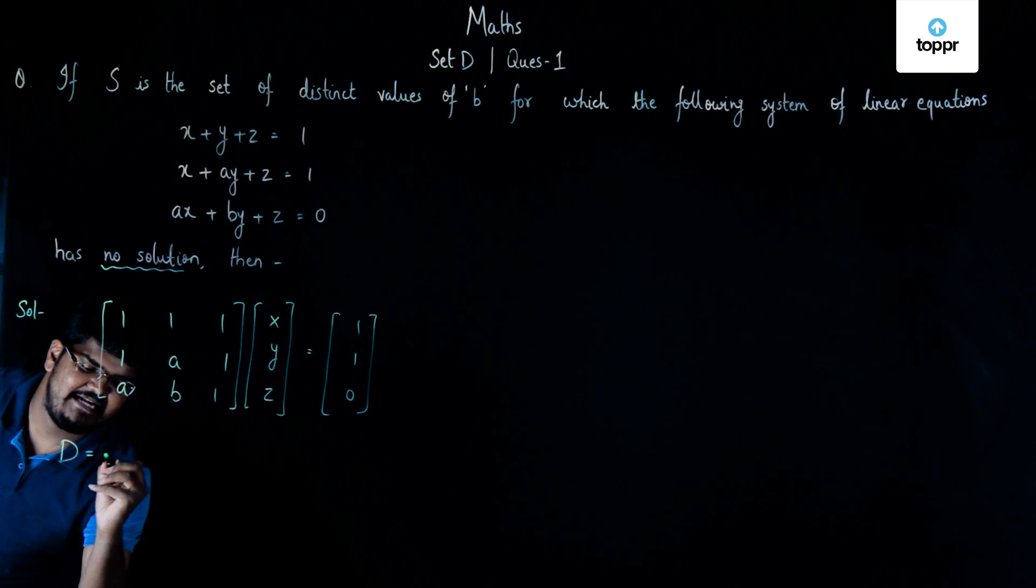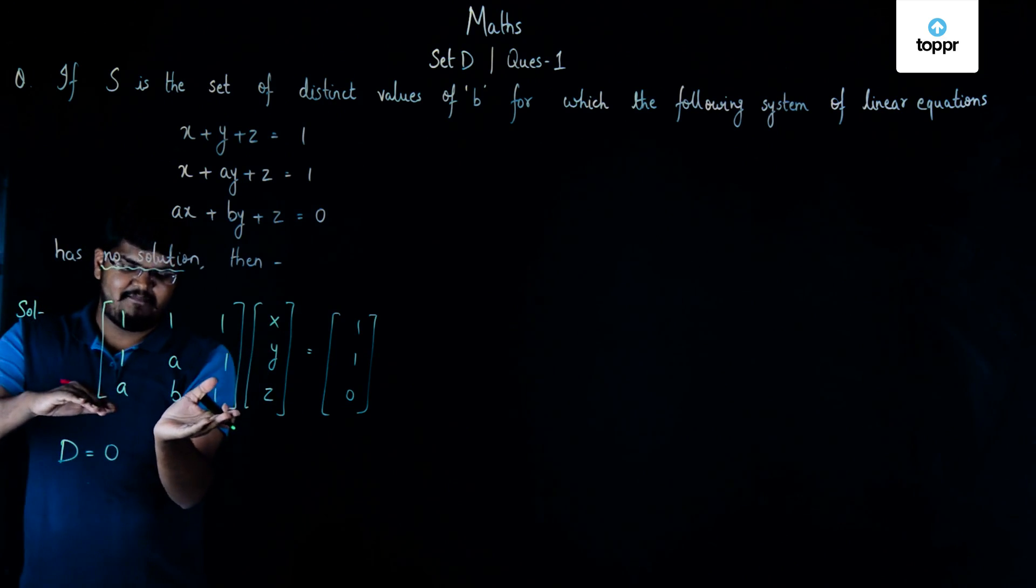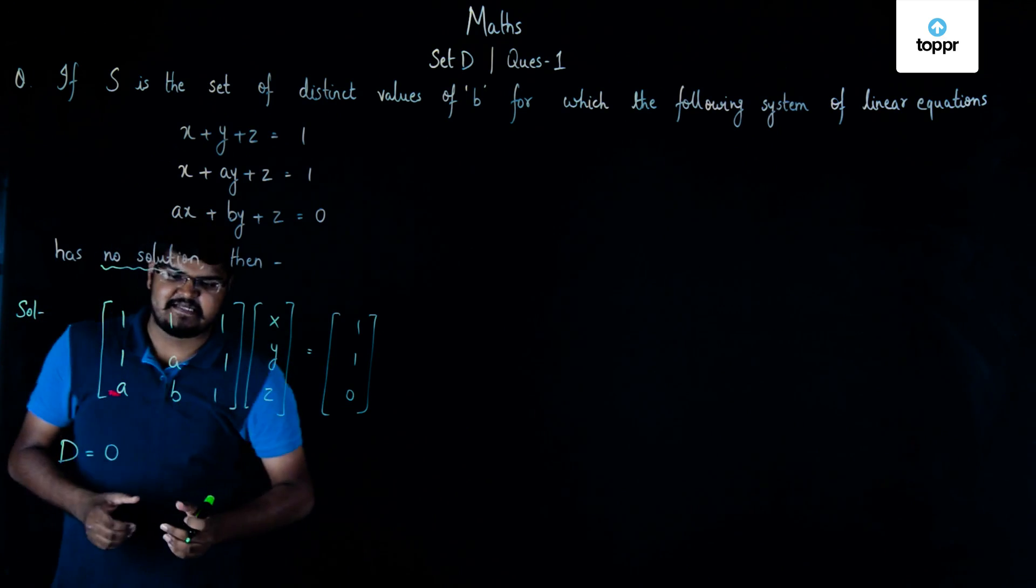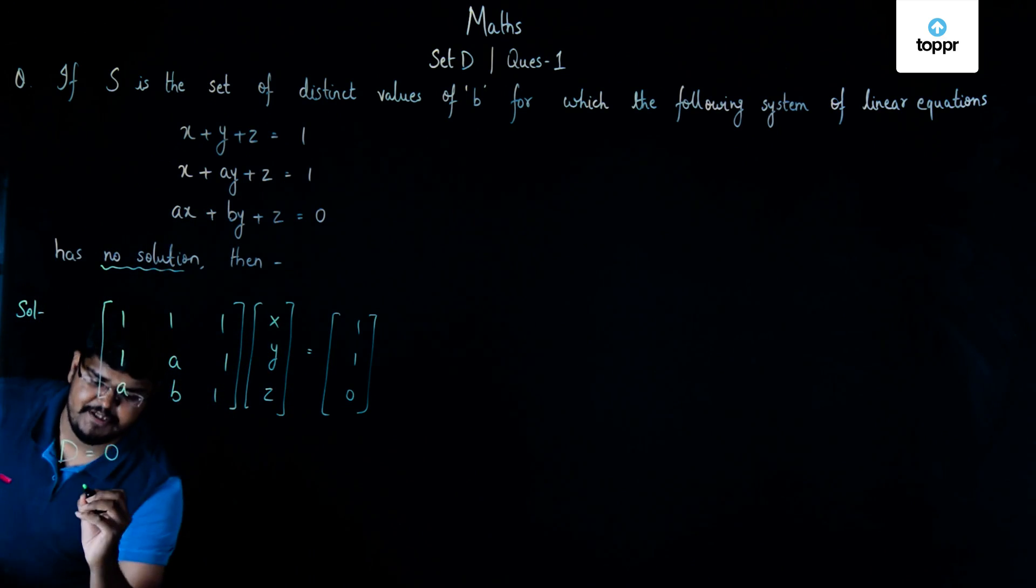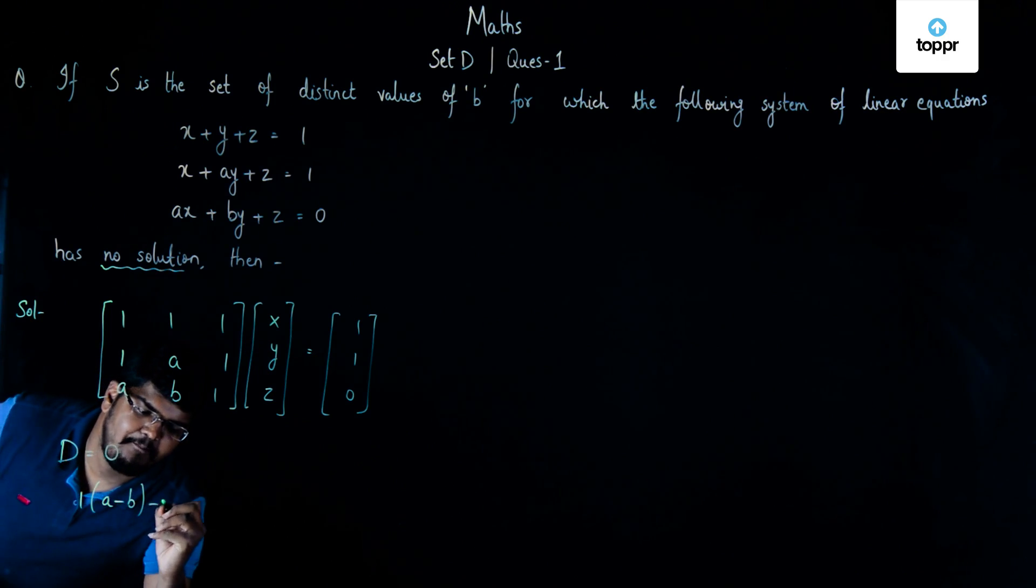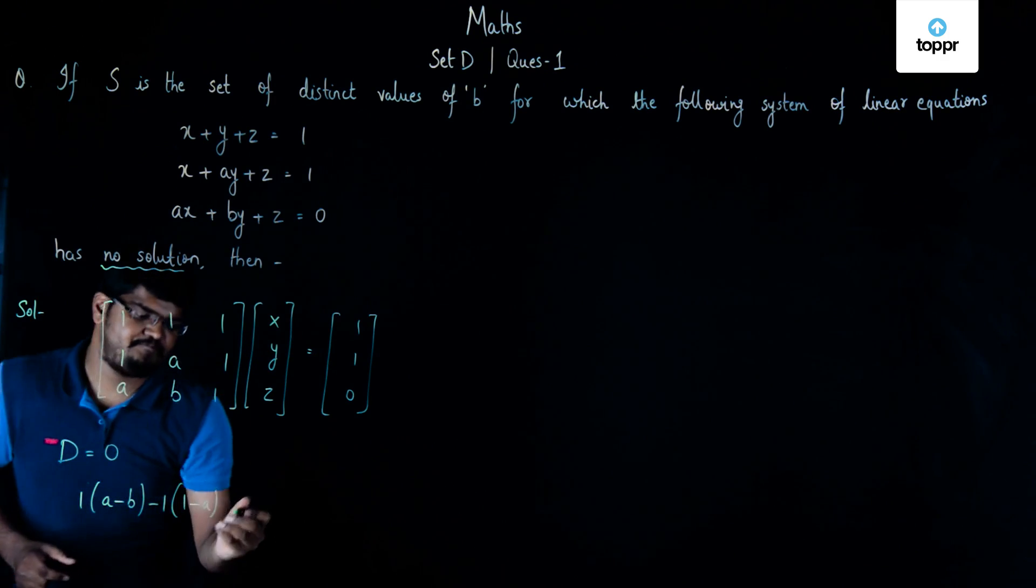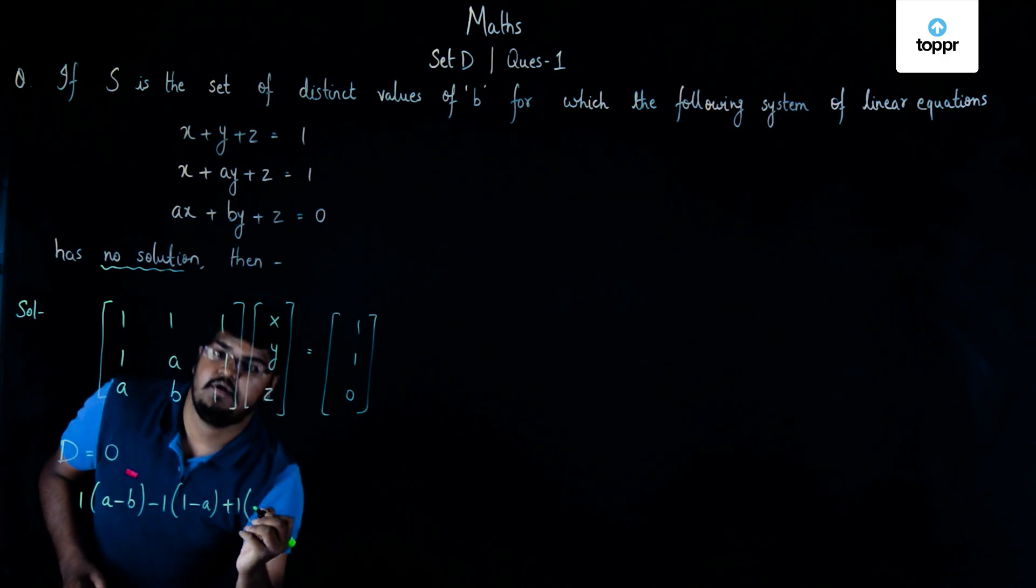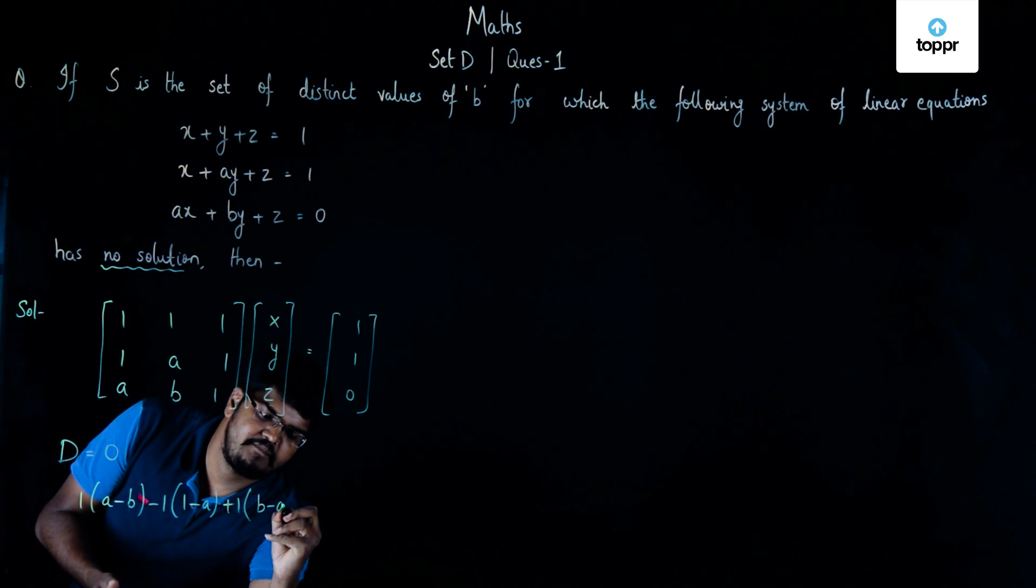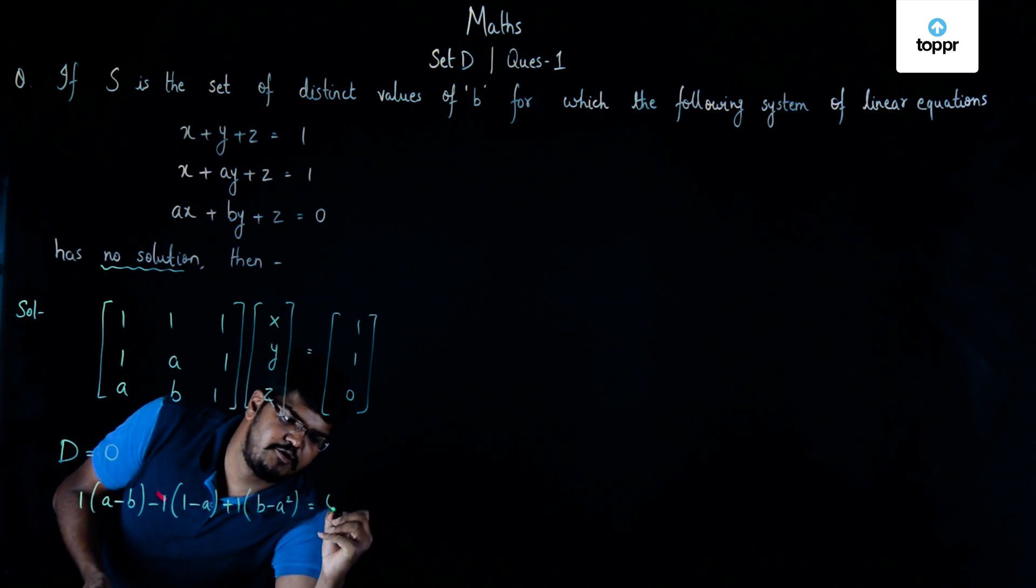So if we expand this matrix for its determinant, then we are going to get 1 into (A minus B) minus 1 into (1 minus A) plus 1 into (B minus A square), and this particular value is equal to 0.